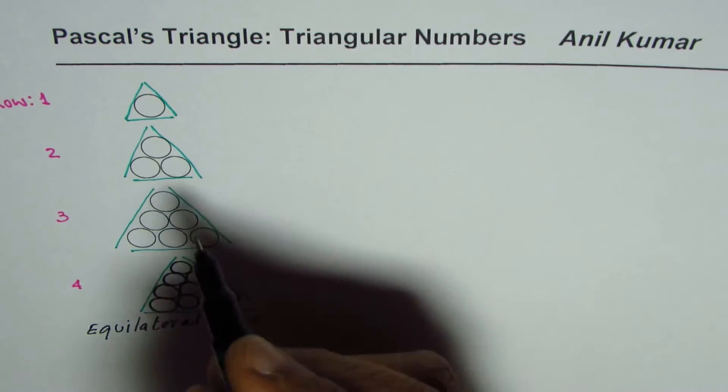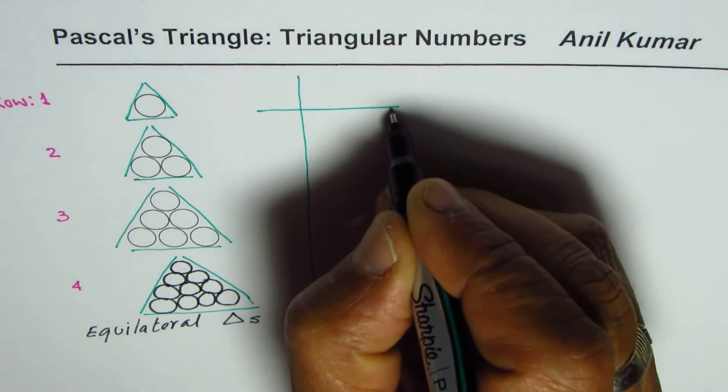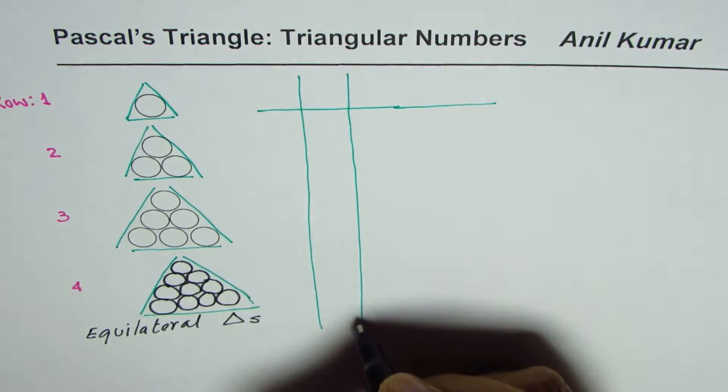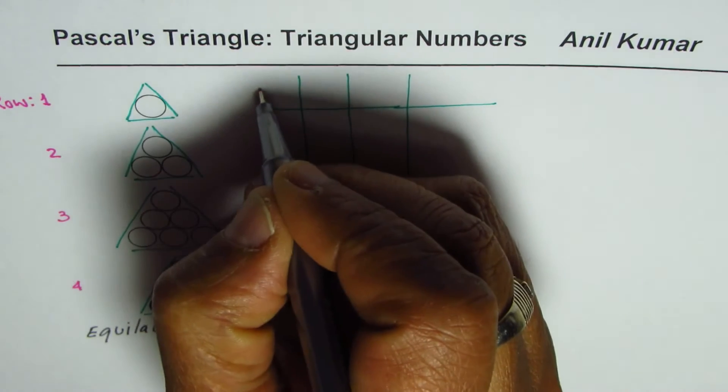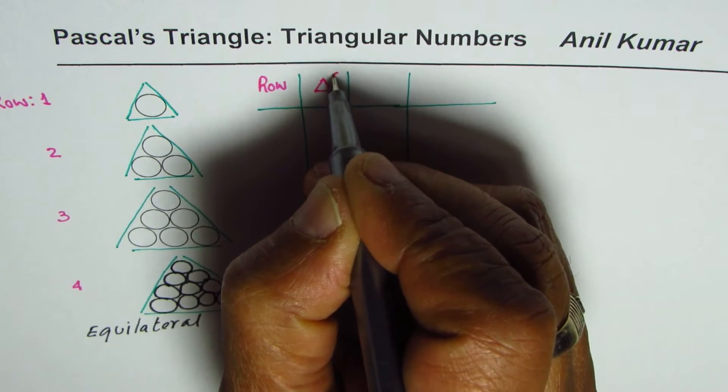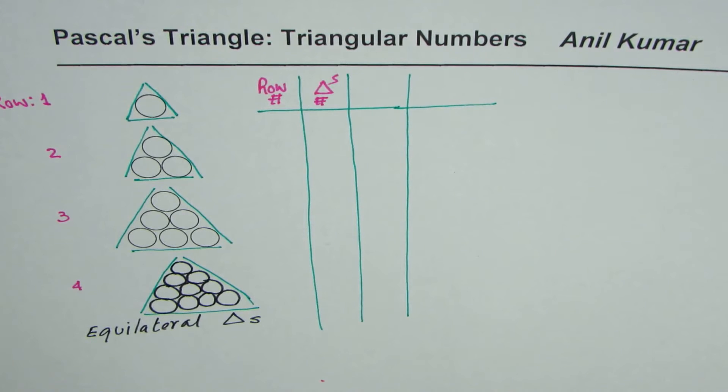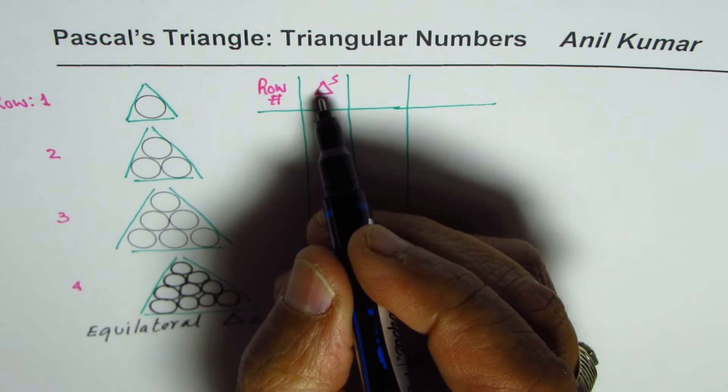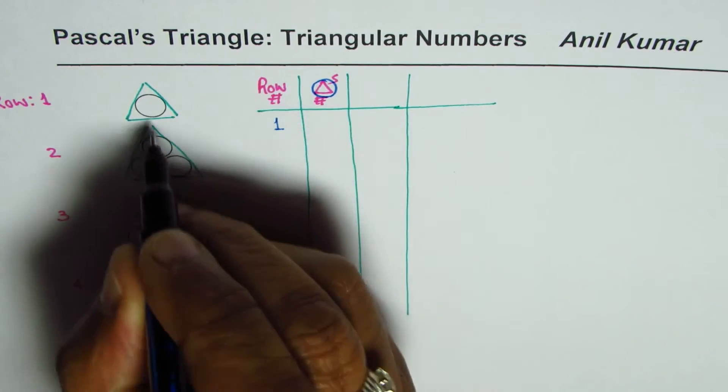So let's make a table to understand the pattern. We'll write the number of rows and the number of circles in each triangle. So here we'll write rows and here we'll write the number of circles. To begin with, in the very first row, we have one circle.